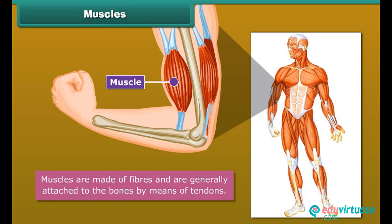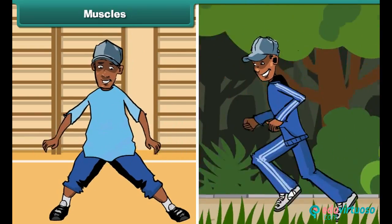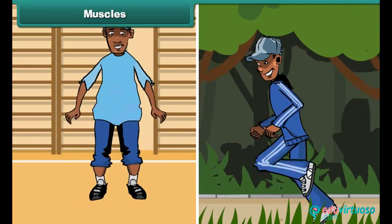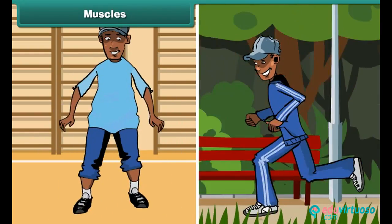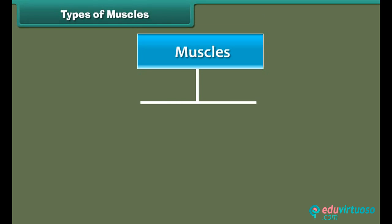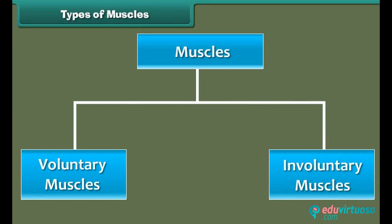Muscles, along with bones, help to give shape to the body. They also help different parts of the body to make movements. According to the nature of their functions, muscles are of two types: voluntary muscles and involuntary muscles.